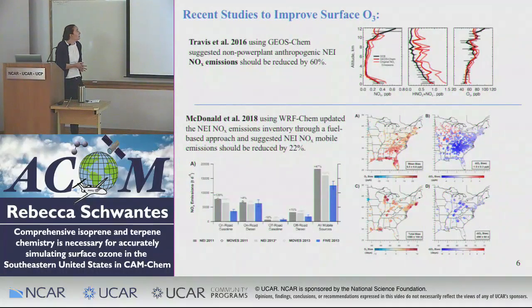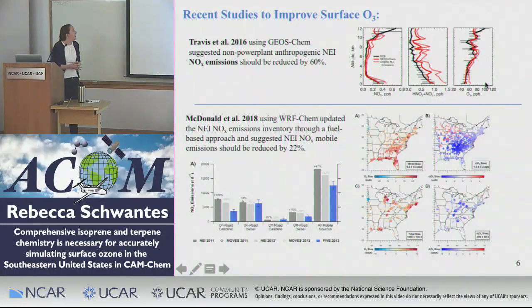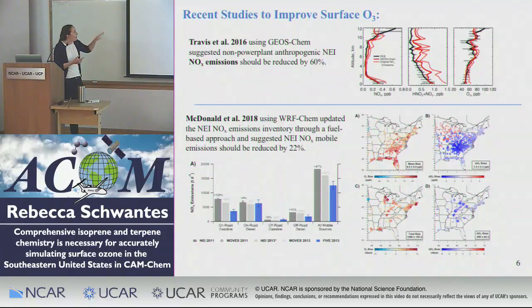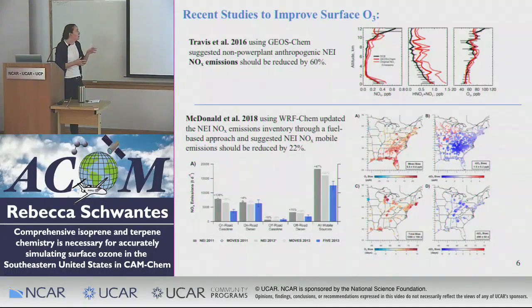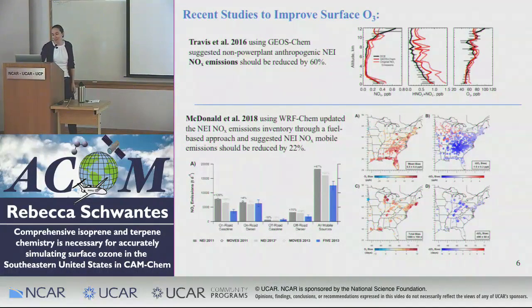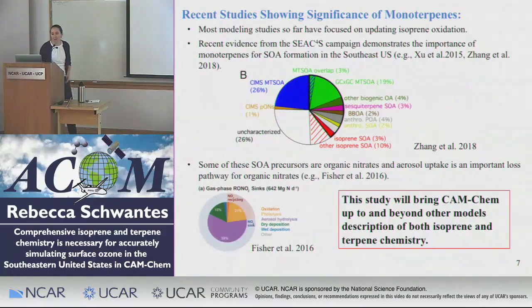There's also recent work on emissions. Traveset 2016 showed that to get ozone correct in their model, they had to reduce non-power-plant anthropogenic NEI NOx emissions by 60 percent — a rather large amount. McDonald et al. 2018, using WRF-Chem with a fuel-based bottom-up approach, suggested the NEI NOx emissions should be reduced by 22 percent — more modest changes. This means there's still room for improvement on the remaining biases, which is where chemistry comes in.